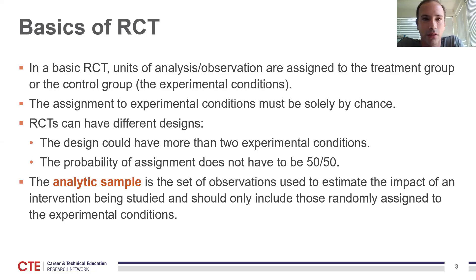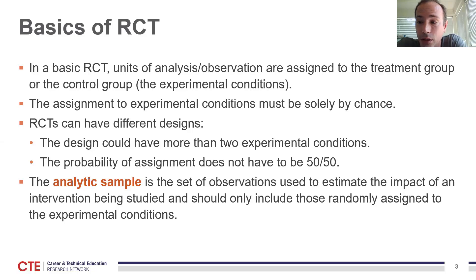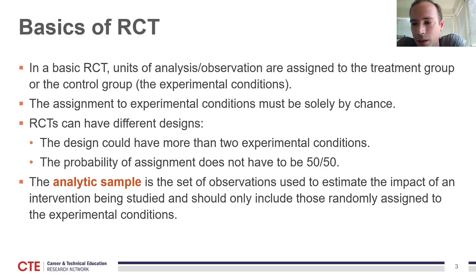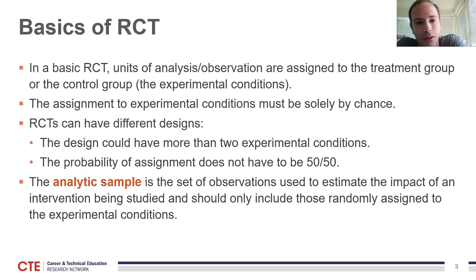In a basic randomized control trial, the units of analysis that are part of the analytic sample are assigned to one of two groups: treatment or control. Participants assigned to the treatment group are eligible to receive the intervention being studied; those assigned to the control group are not. Importantly, the assignment of individuals to experimental conditions must be solely by chance, such as flipping a coin and assigning units to the treatment group if the coin comes up heads, and to the control group if it comes up tails.